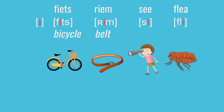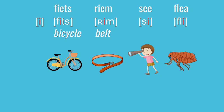Next, there's E. E uses a lowercase I in IPA. It shows up in English words like sea and flee, and in Dutch words like fiets and riem.